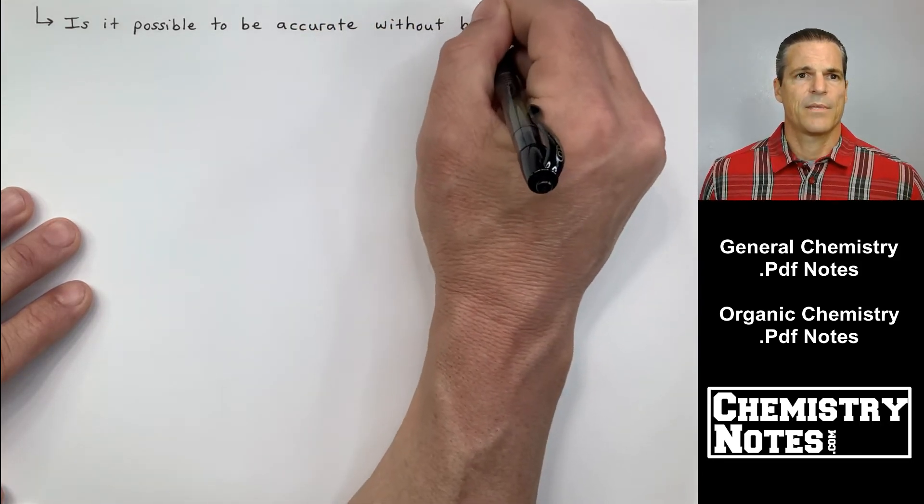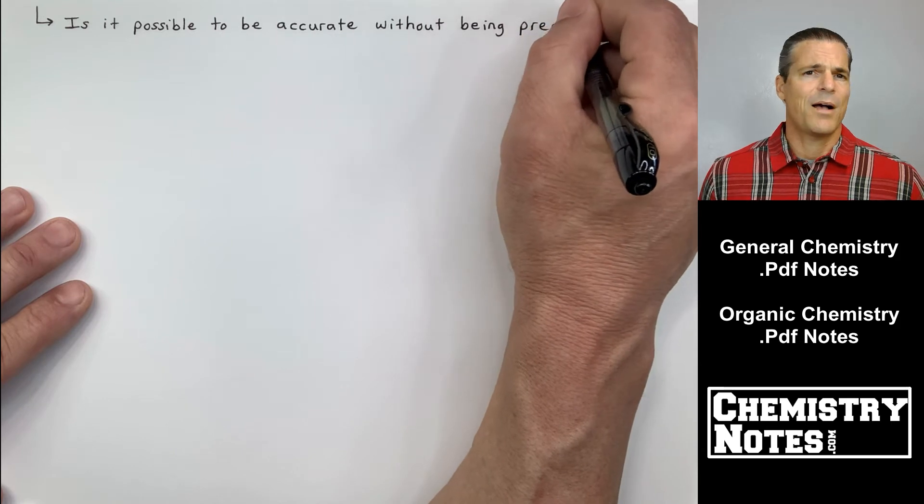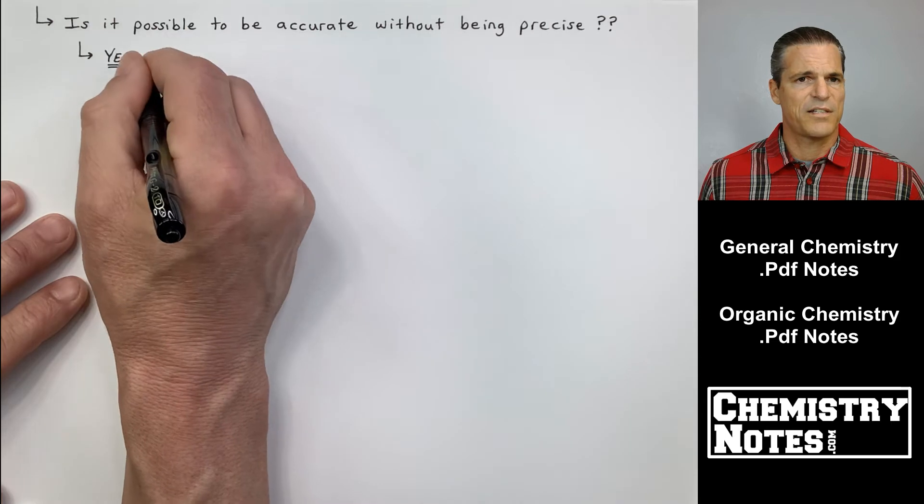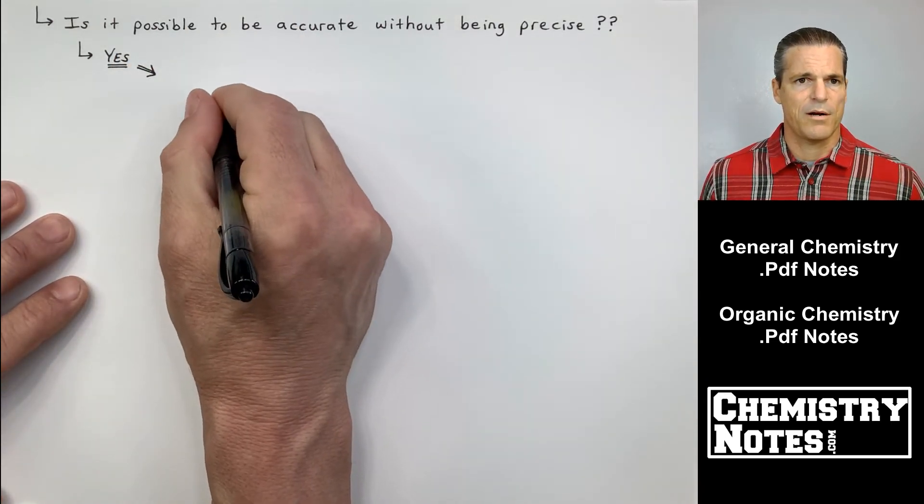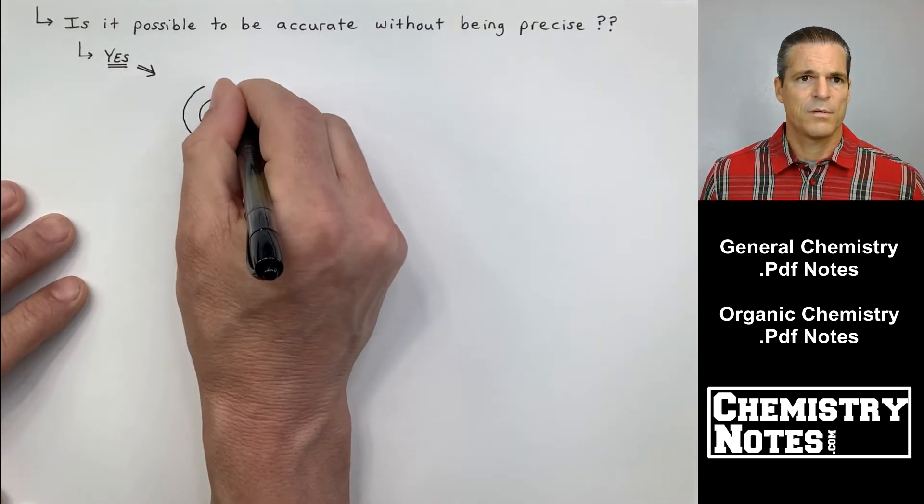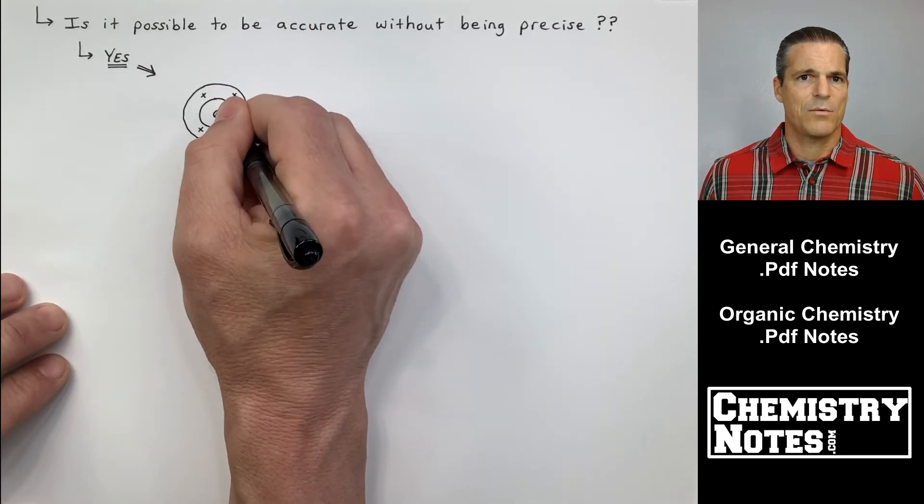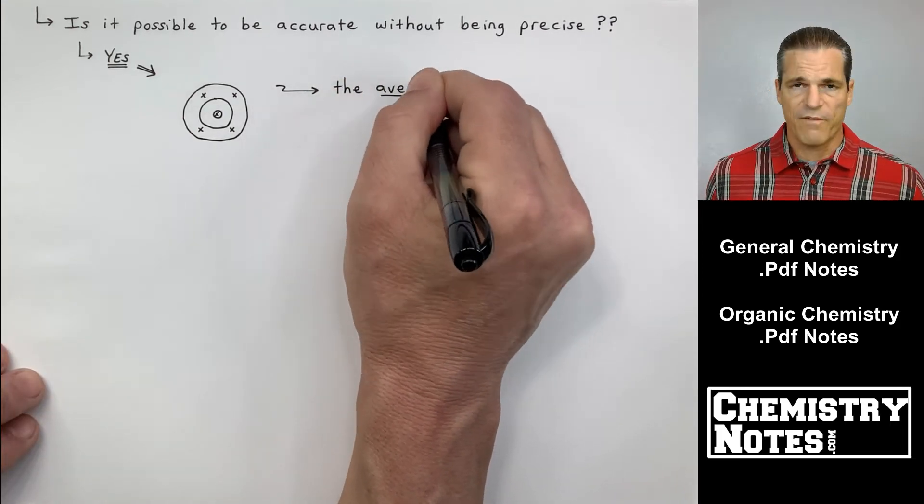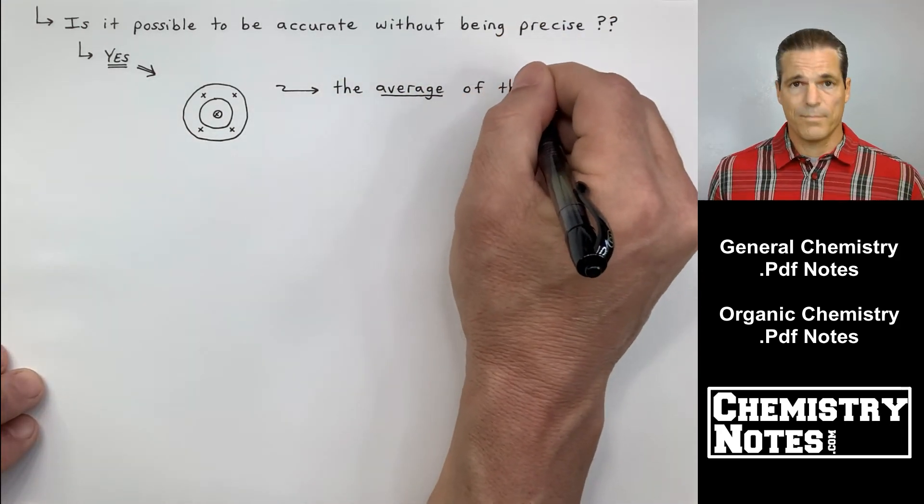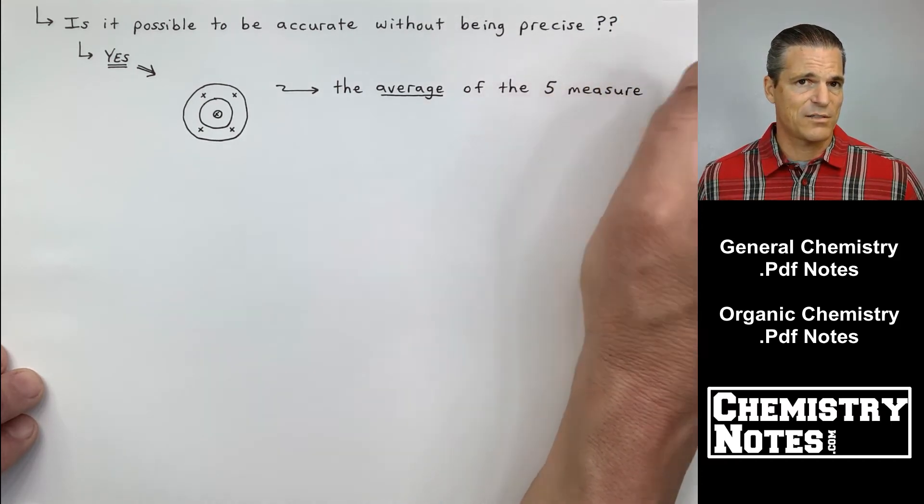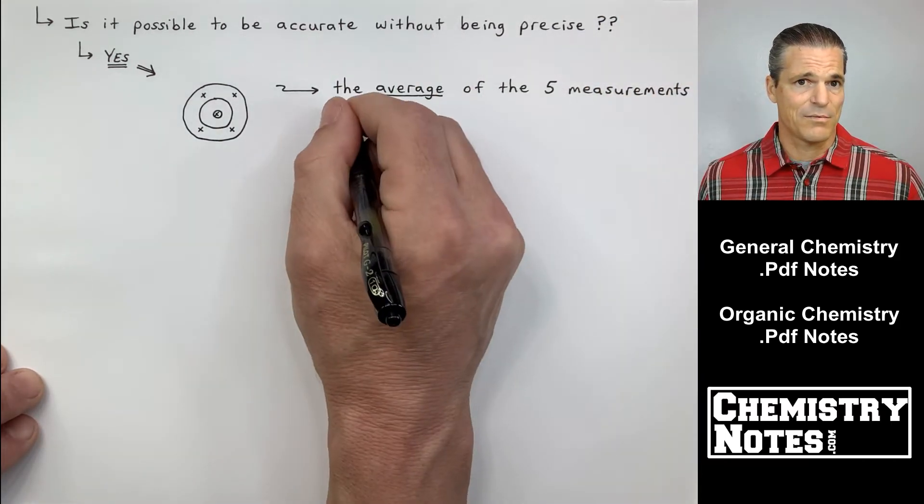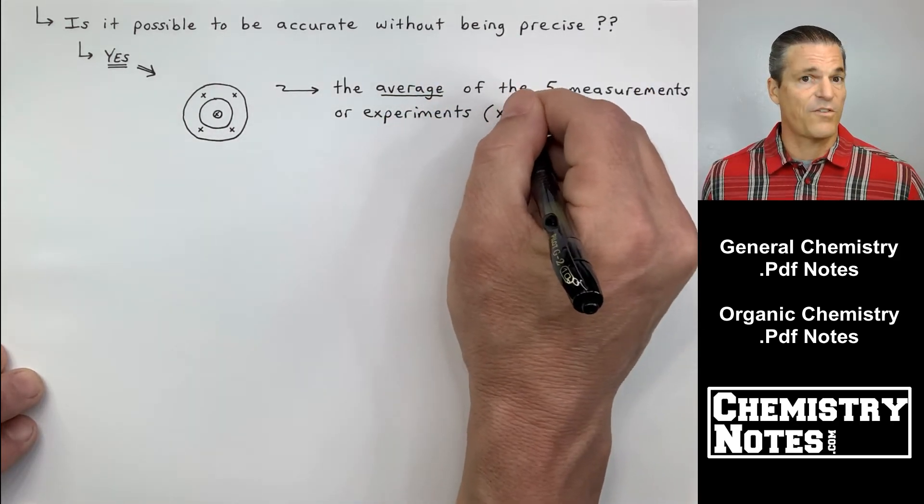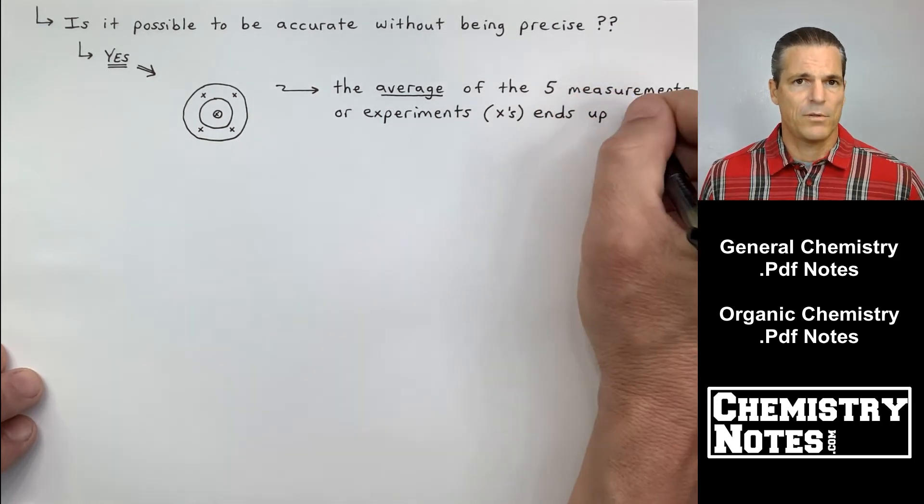Fourth dartboard coming up. Is it possible to be accurate without being precise? I see this question asked all the time on quizzes and tests, so I thought I'd put it here. Here's my fourth dartboard. How am I going to draw this so I'm accurate without being precise? Well, I said we had five experiments or measurements. There's my five darts. One dart's a bullseye. And the average of the five darts is also the bullseye. The average of the five measurements or five experiments or five trials ends up being the bullseye.